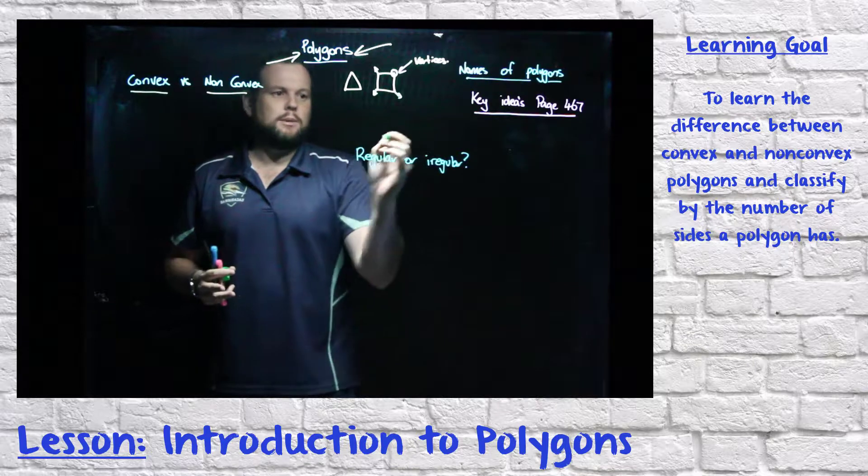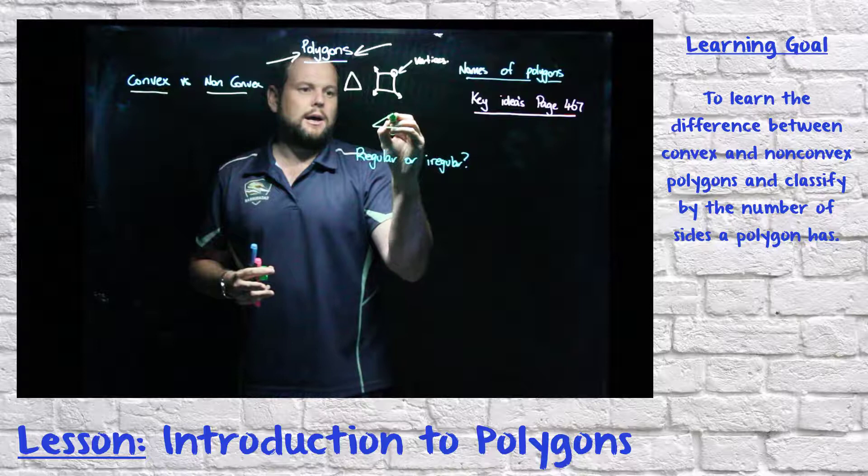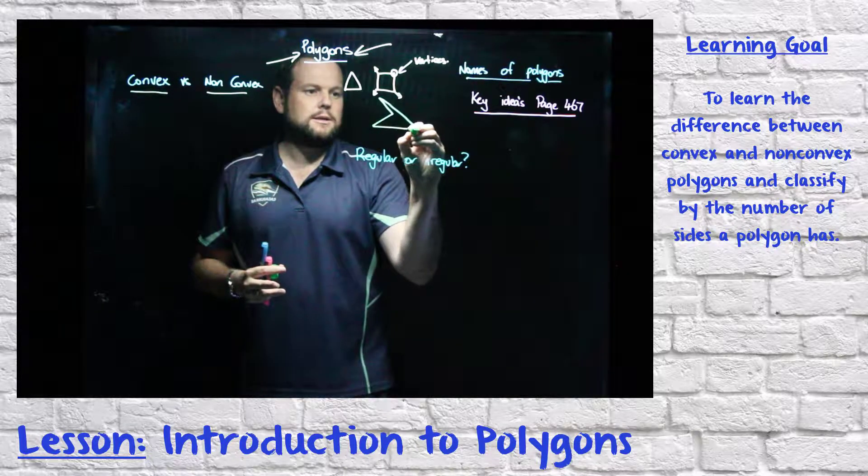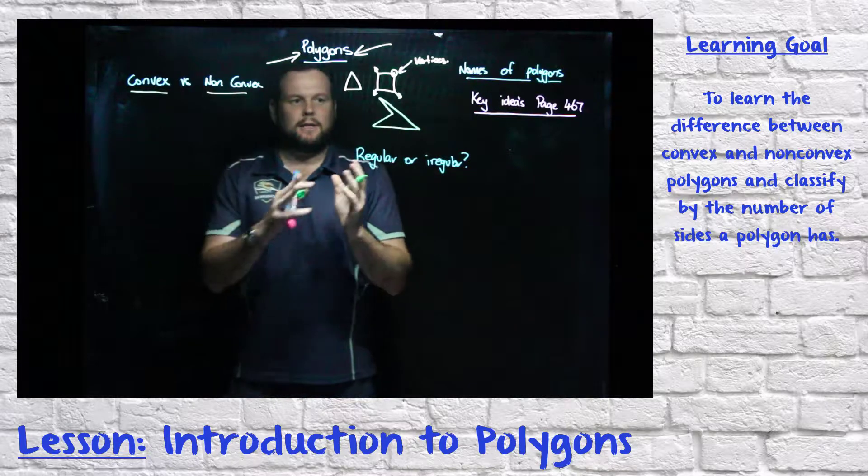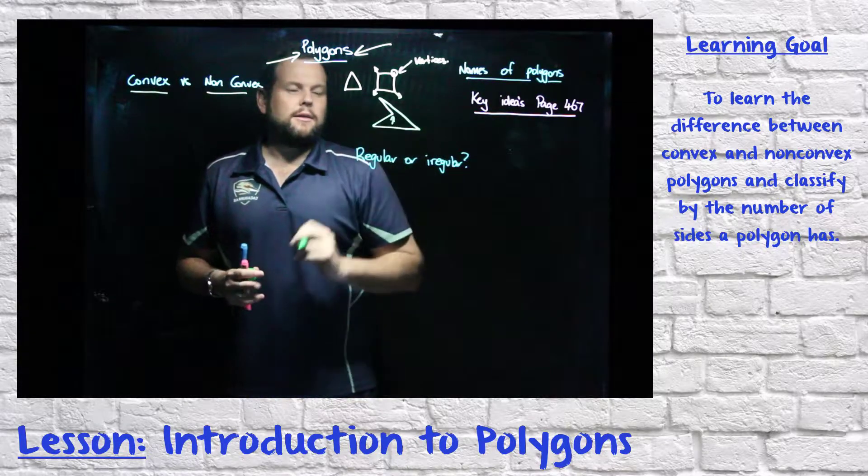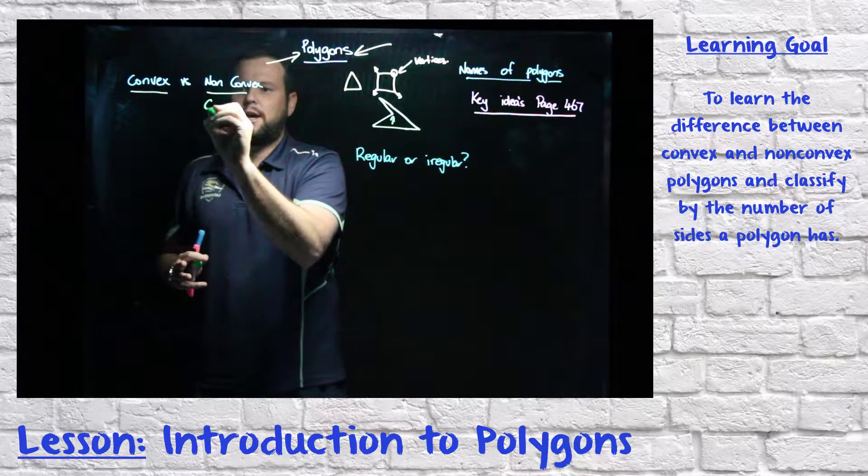However, we can have a shape that is non-convex. For instance, if we had a polygon that looks like this, that's a four-sided shape. However, it's got one angle here that is non-convex.